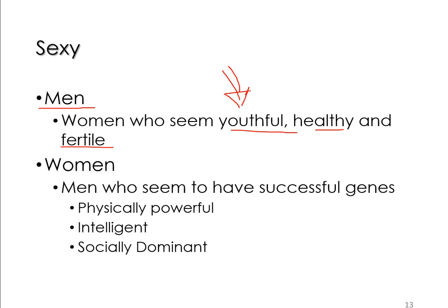As an example: suppose as a man you develop a mutation that makes you attracted to women in their 60s or 70s. You act on that attraction, but women well past menopause cannot have children. So the mutation saying 'be attracted to older women' dies off with you in your generation. That's how evolution works.